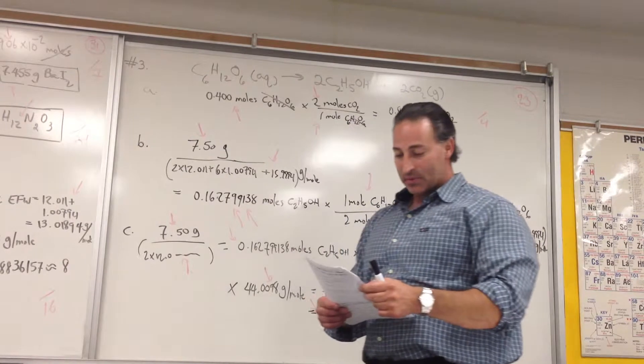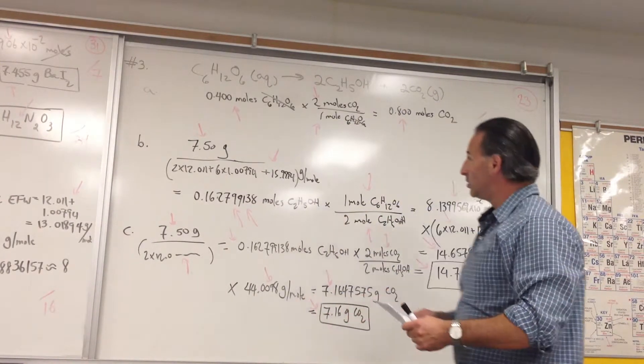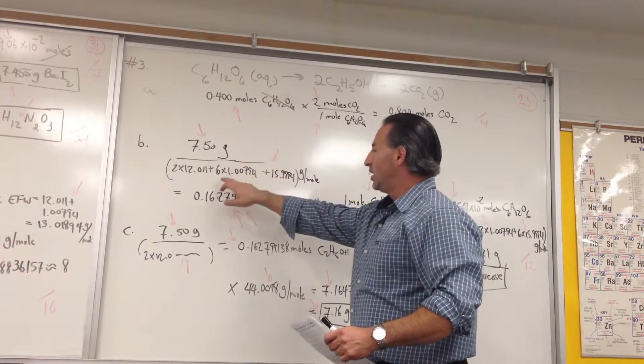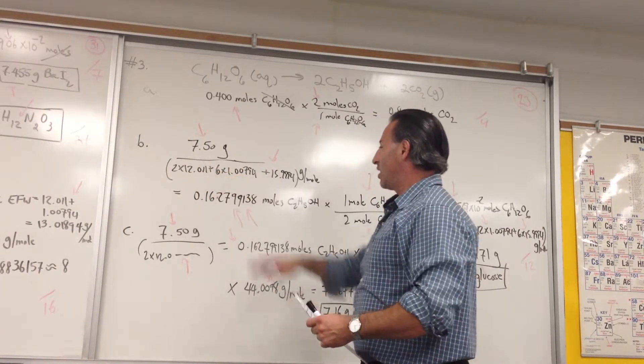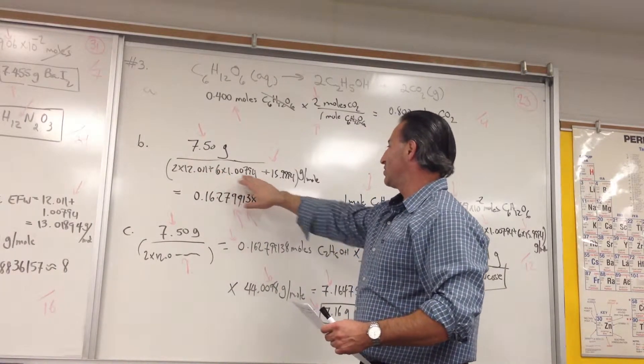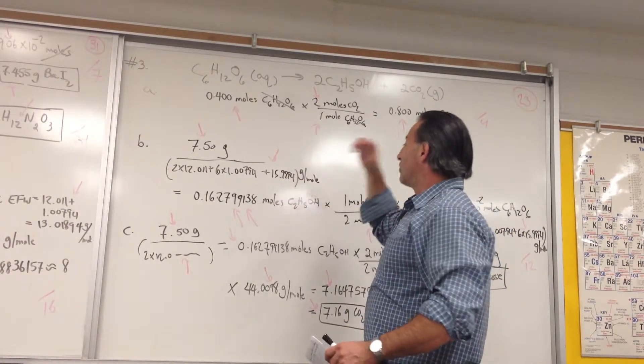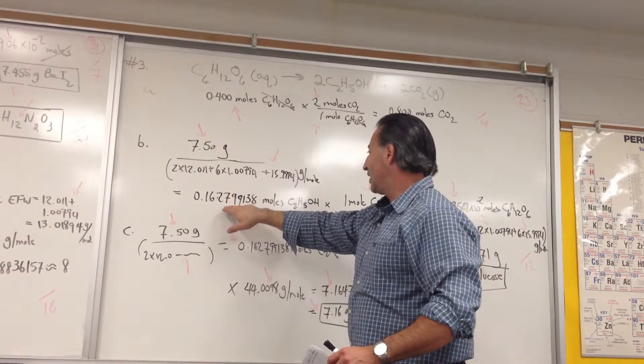In question B, they're asked, How many grams of glucose are needed to form 7.5 grams of ethyl alcohol? 2 times 12 for the mass of the carbon, 6 times 1 for the mass of the hydrogen, 15.4 for the mass of the oxygen. That tells us how many moles of ethanol we have.